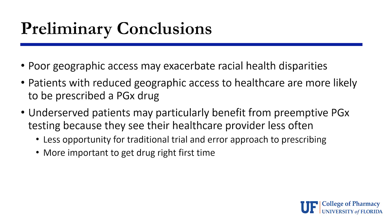This really highlights how medically underserved patients are particularly strong candidates for preemptive pharmacogenetic testing. They're not seeing their healthcare providers as much, yet they're getting prescribed more drugs with pharmacogenetic guidelines. They therefore have less opportunity for the traditional trial-and-error approach to prescribing — where you try a drug, it doesn't work or causes side effects, and you come back for a different one. If we can use pharmacogenetics to get the drug right the first time, these patients benefit the most because they're not coming back as often to trial-and-error their prescriptions.